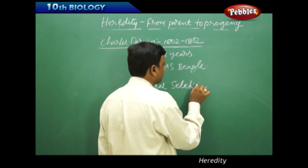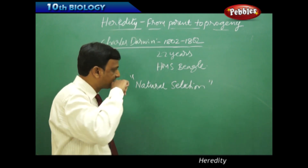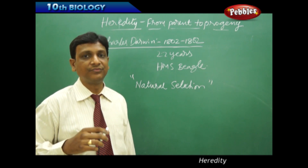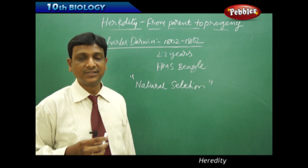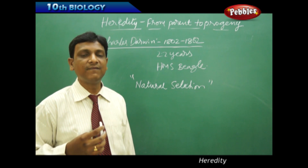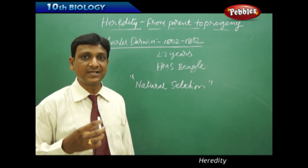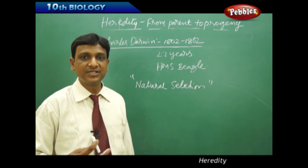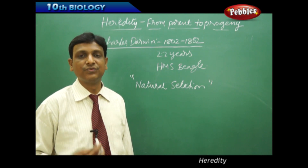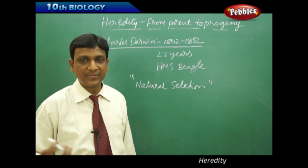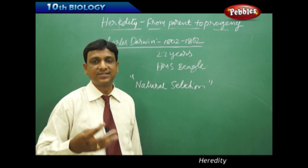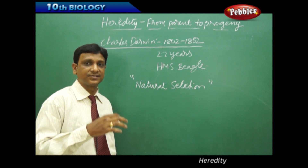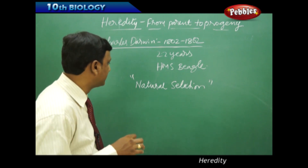What is natural selection? According to this theory, nature itself will select only the suitable organisms and the rest will be eliminated. Survival of the fittest means only the fittest organisms will survive. What is the meaning of fittest? The organisms which can get their food and protect themselves in the present habitat and environment will survive. Those which cannot get food or protect themselves will be eliminated from the existing scenario. That is called survival of the fittest, and nature will select such organisms — that is the theory of natural selection.